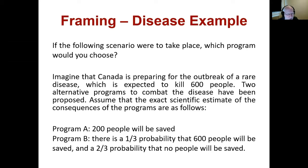Here's the second scenario — the text is largely the same. Imagine that Canada is preparing for the outbreak of a rare disease expected to kill 600 people. Two alternative programs are proposed. Program A: 200 people will be saved. Program B: there's a one-third probability that 600 people will be saved and a two-thirds probability that no people will be saved. Pause the video to make your choice between program A and program B.